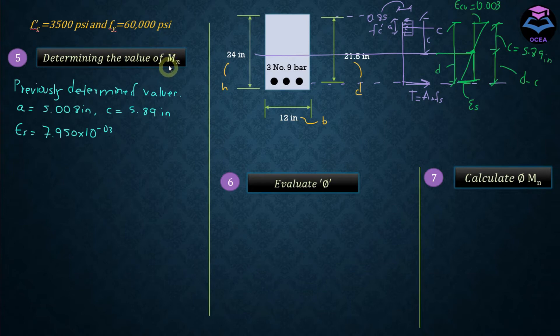Step number five: determining the value of MN, that is the nominal strength of beam. Let me first draw this diagram here which is showing the forces. This is the depth of stress block a, and the C force is located at a distance of a by two from the top.